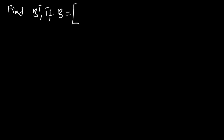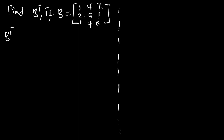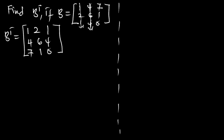Let's look at example two. Find B transpose if matrix B is given as [1, 4, 7; 2, 6, 1; 1, 4, 0]. B transpose is going to be: the first column placed on the first row gives 1, 2, 1; the second column on the second row gives 4, 6, 4; and the third column on the third row gives 7, 1, 0. And we've transposed this matrix.